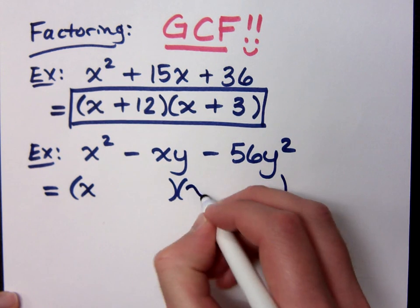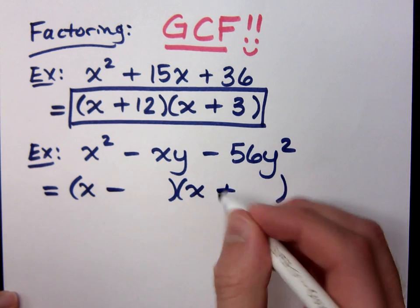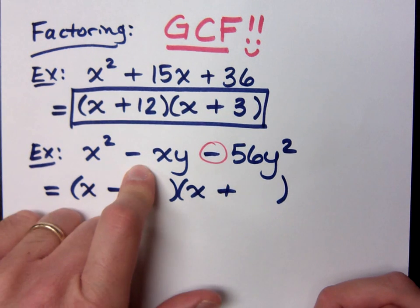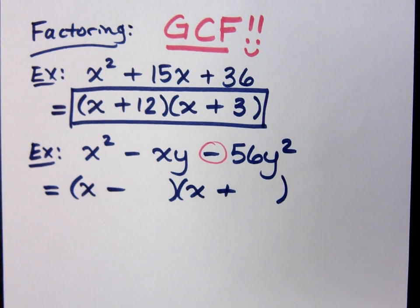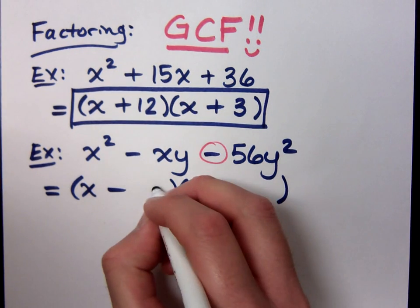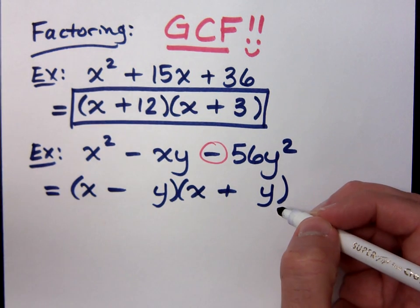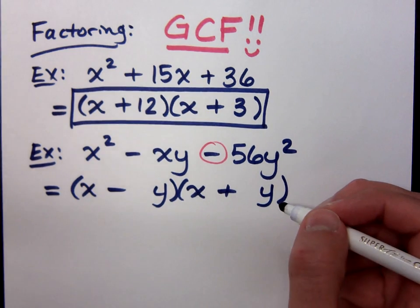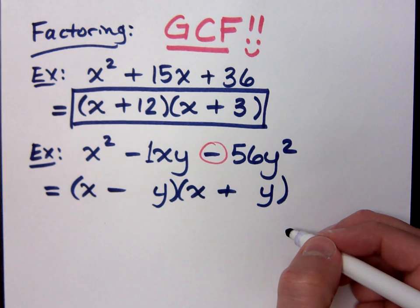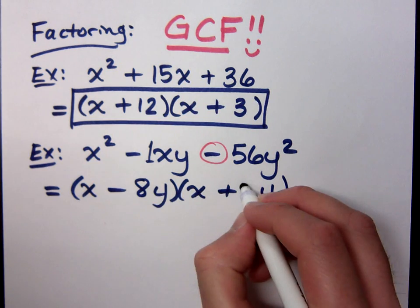X squared breaks down as X times X. What do you know about your signs? One minus, one plus, because you have to multiply to get a negative. Since I have a negative middle term, the negative number must be larger. I've got y squared to break down along with the 56. Y squared breaks down as Y and Y. These guys have opposite signs, so when I'm adding them I have to do the difference of the absolute values. The difference has to equal one. How do you multiply to get 56 but the numbers are off by one? Minus eight and plus seven.